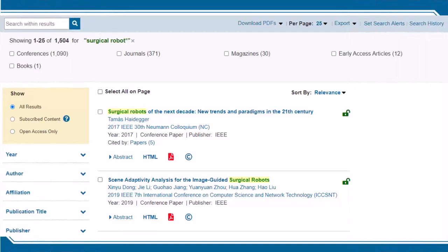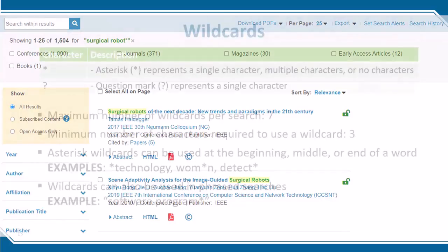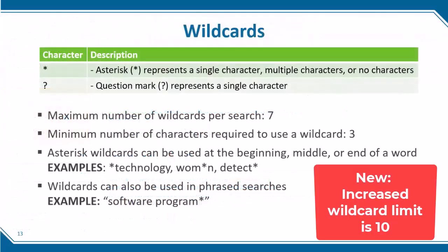But I can use a wildcard within quotes to address that. IEEE Xplore supports two wildcards: an asterisk, which stands for any or no characters, and a question mark, which stands for a single character. You can use a maximum of seven asterisk wildcards per search, and you need at least three characters to use a wildcard. The asterisk wildcard can be used at the end of a word, in the middle of a word, or at the beginning of a word.